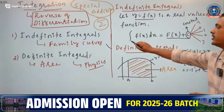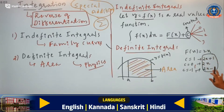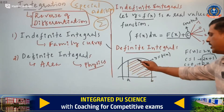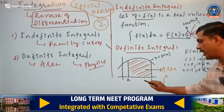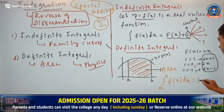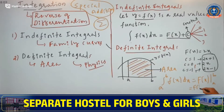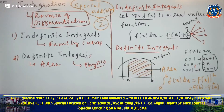Indefinite integral: integration symbol, f of x dx equals F of x plus c. With plus c, if you substitute different values, you get different curves. And definite integral means area under the curve — you calculate area from a to b: integral from a to b of f of x dx, which equals F of x evaluated at limits a to b — that is, upper limit minus lower limit.